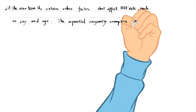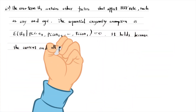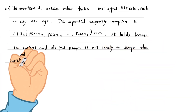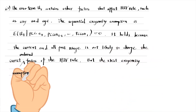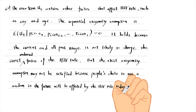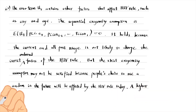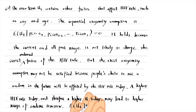The sequential exogeneity assumption holds because the current and all past condom usage is not likely to change the current and observed factors of the HIV rate. In other words, the past explanatory variables have no prediction effect on the future error term. But the strict exogeneity assumption may not be satisfied because people's choice to use a condom in the future will be affected by the HIV rate today. A higher HIV rate today — and therefore a higher error term today — may lead to higher usage of condoms tomorrow. In other words, the past error term tends to have a feedback effect on the future explanatory variable.